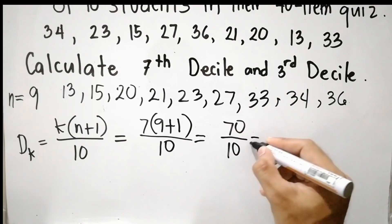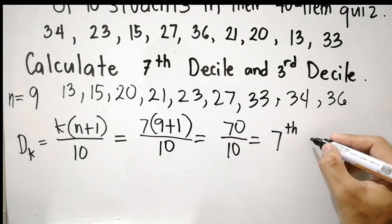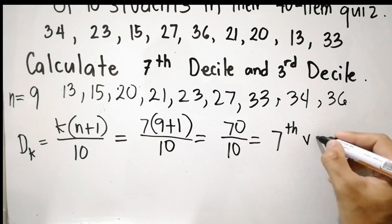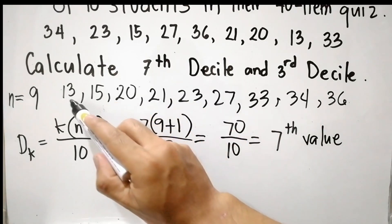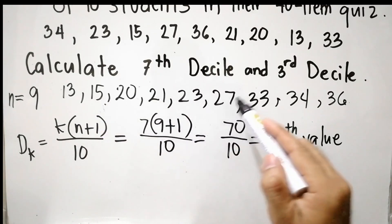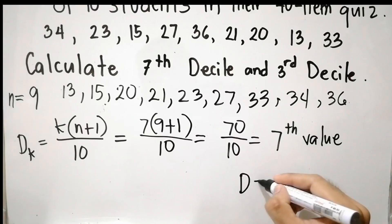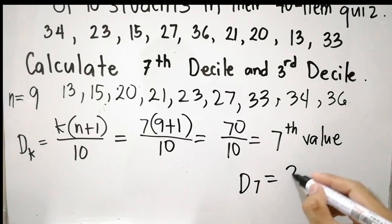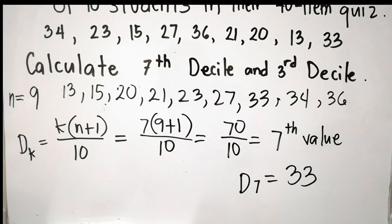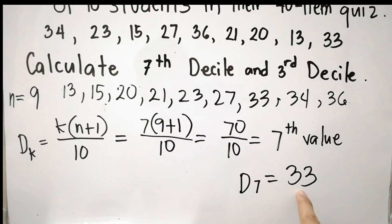The location is the 7th value. Counting: 1, 2, 3, 4, 5, 6, 7 — the seventh value is 33. Therefore D sub 7 is equal to 33. To interpret: 70 percent of the scores is less than or equal to 33.